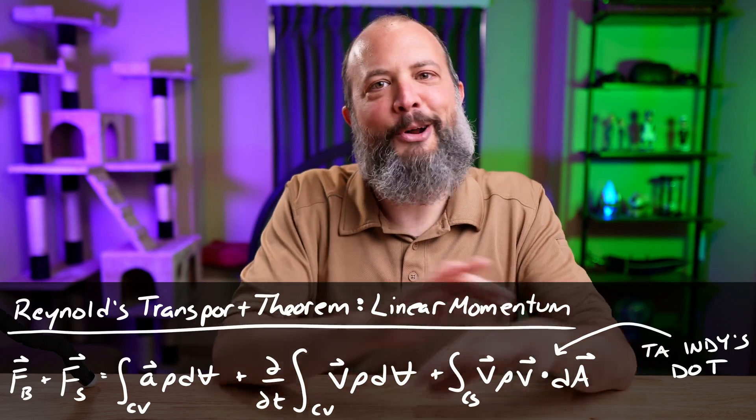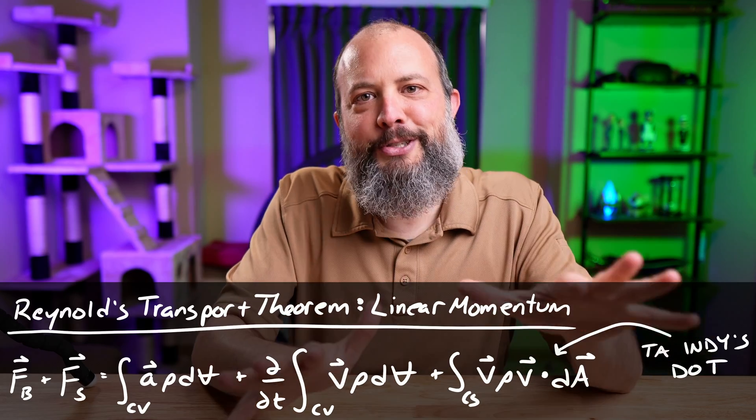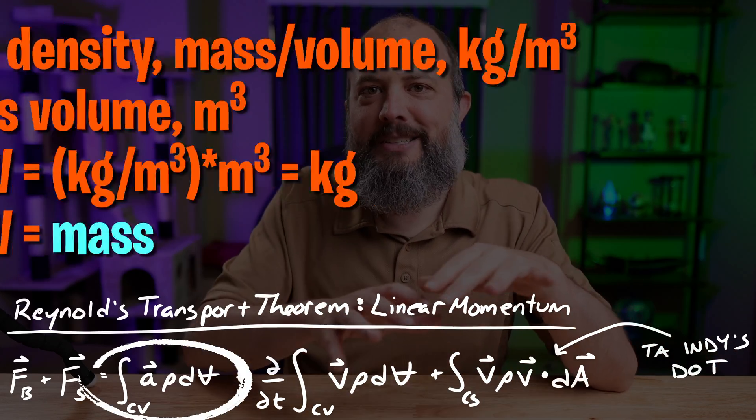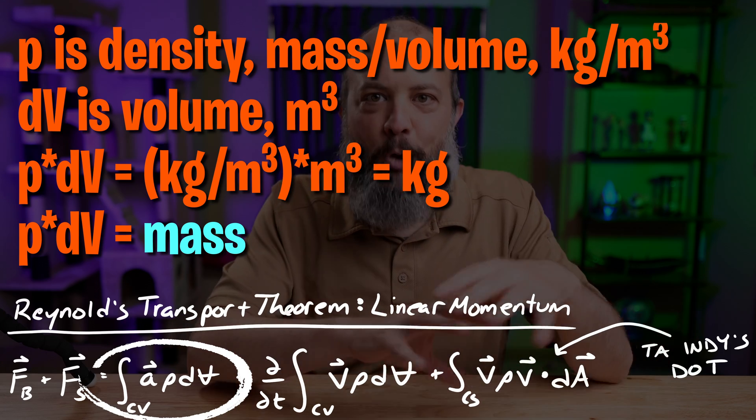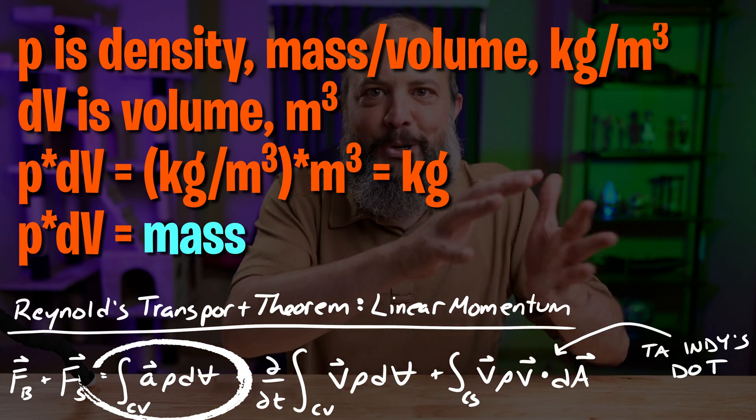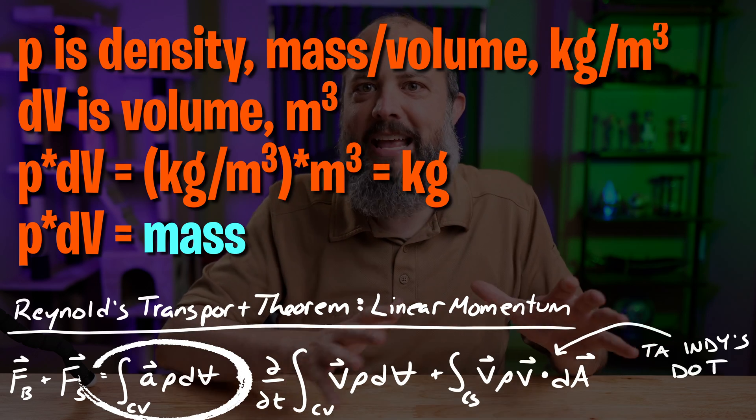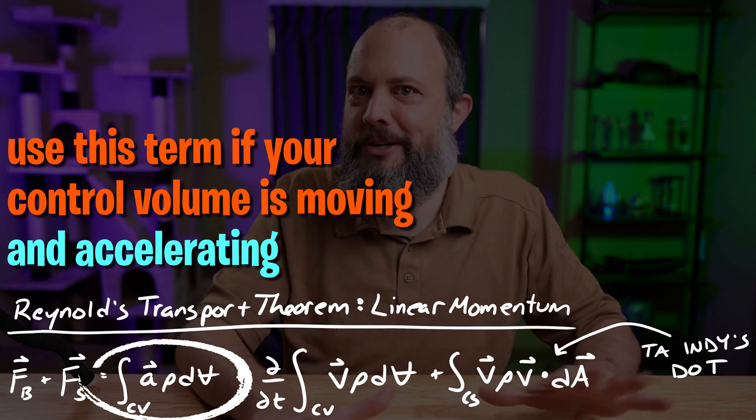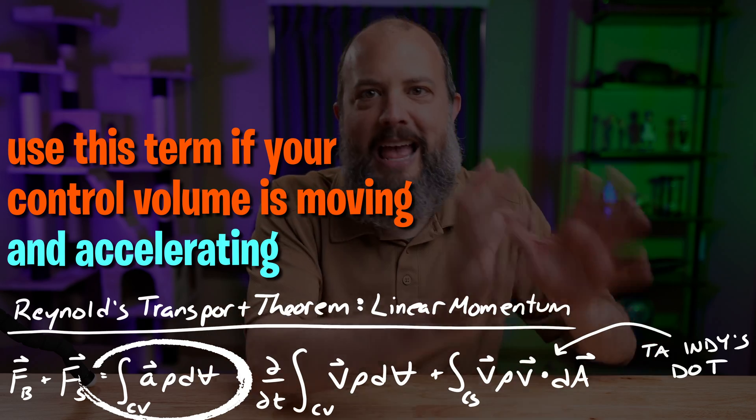So now onto the right hand side, all of these integrals. So the first one, you see an A term that's a vector. That term is mass times acceleration. Rho dV, that's density times volume. That's mass, right? So this integral is just a really complicated way of saying mA. So for this problem, we don't have any acceleration. You can completely ignore this mA term.